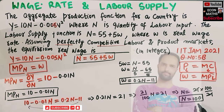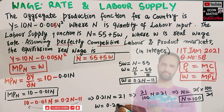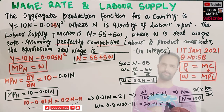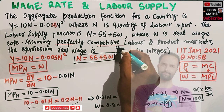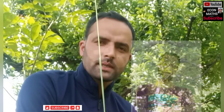Now we need to find the real wage rate. If n = 100, plug it into the wage equation: w = 0.2 × 100 - 11 = 20 - 11 = 9. So our equilibrium real wage is equal to 9. I hope I made myself clear in this video. Thank you. For more videos on mathematical economics, please subscribe, like, comment, and share.